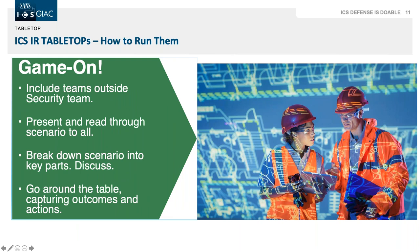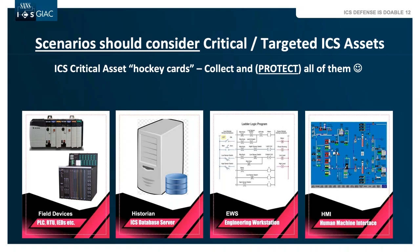Once the planning is done, it's game on. You have a scenario and a team in place — get around the table and start discussing. Make sure you have teams beyond just security: safety, law enforcement may be impacted or relied upon. Share the actual scenario with everybody around the table, break the event down, discuss going around the table, capture outcomes based on your technology and processes, and record and assign actions as you go. Before we jump into the actual scenarios, I want to present the additional hockey cards.